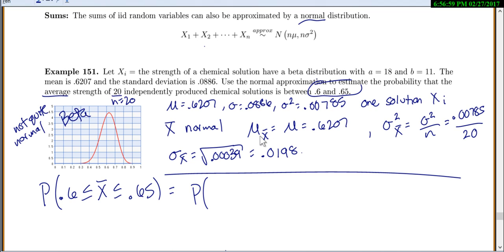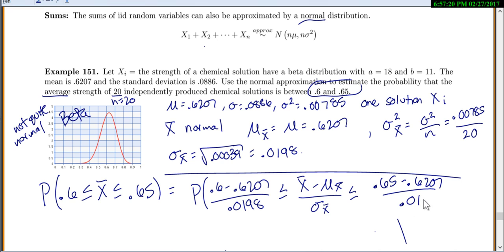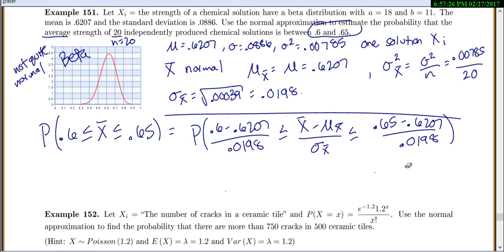I'm going to need to standardize both of those, but I make sure I use the numbers that are for x-bar. So we'll do 0.6 minus 0.6207 divided by 0.0198 because I was doing x-bar minus the mean of x-bar over standard deviation of x-bar. And 0.65 minus 0.6207 over 0.0198, which equals the probability that z is between negative 1.04 and 1.46.